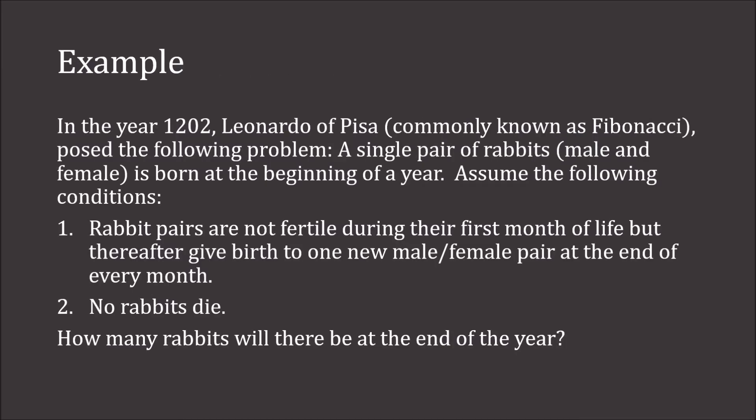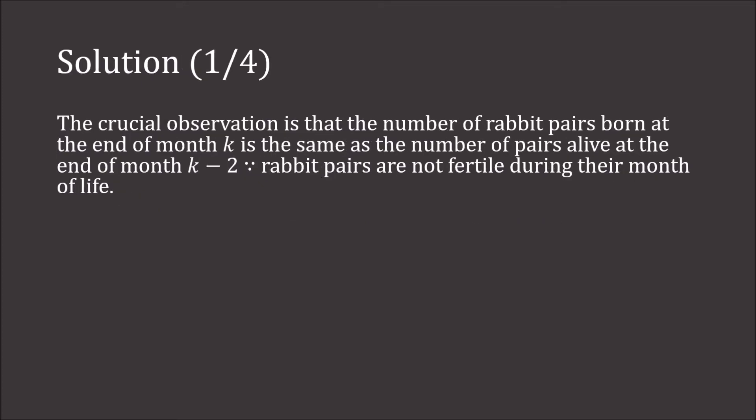In the year 1202, Leonardo of Pisa, commonly known as Fibonacci, posed the following problem. A single pair of rabbits — a male and female — is born at the beginning of the year. Rabbit pairs are not fertile during their first month of life, but thereafter give birth to one new male-female pair at the end of every month, and no rabbits die. How many rabbits will there be at the end of the year? The key observation is that the number of rabbit pairs born at the end of month k is the same as the number of pairs alive at the end of month k minus 2, because rabbit pairs are not fertile during their first month of life.